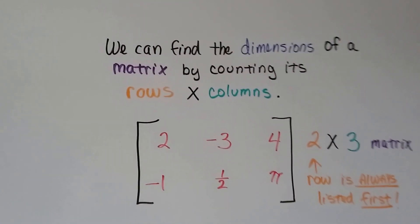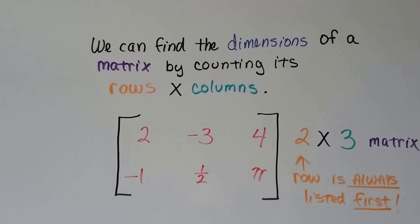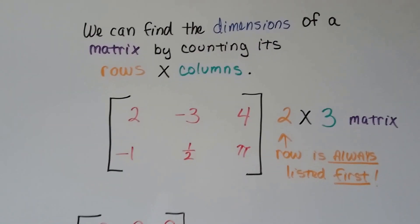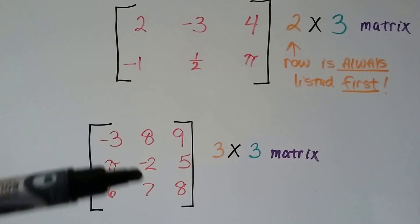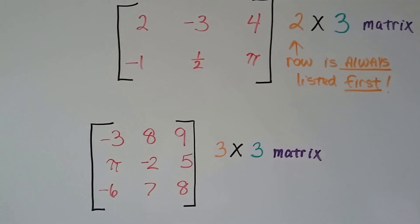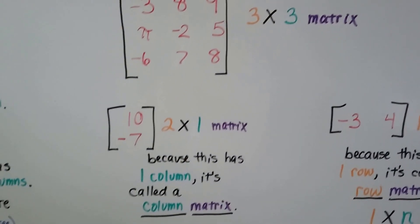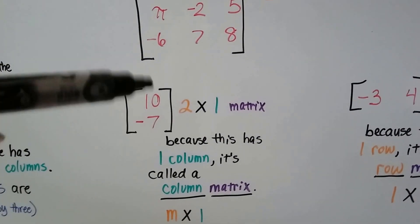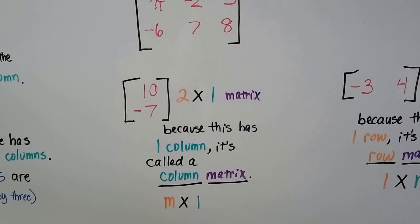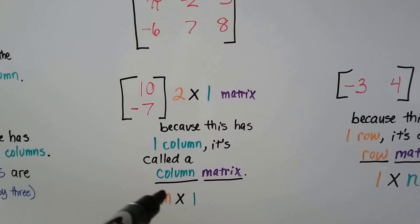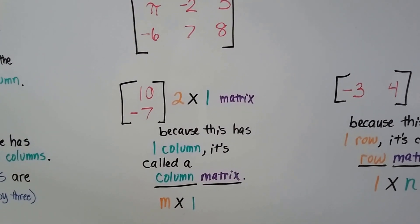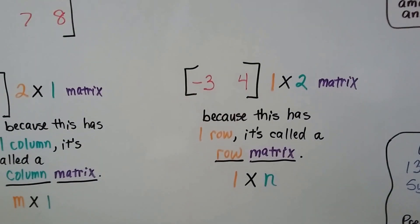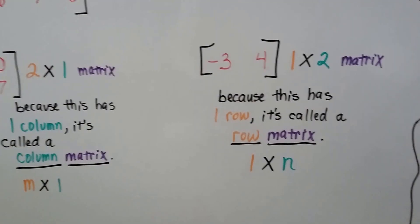We can find the dimensions of a matrix by counting its rows and its columns. This has 2 rows, 3 columns, so it's a 2 by 3 matrix. And the row is always listed first. This has 3 rows and 3 columns, so it's a 3 by 3, a square matrix. This one has 2 rows but only 1 column, so it's a 2 by 1. And because it has only 1 column, it's called a column matrix. This one has 1 row but 2 columns, so it's a 1 by 2 matrix. And because it only has 1 row, it's called a row matrix.